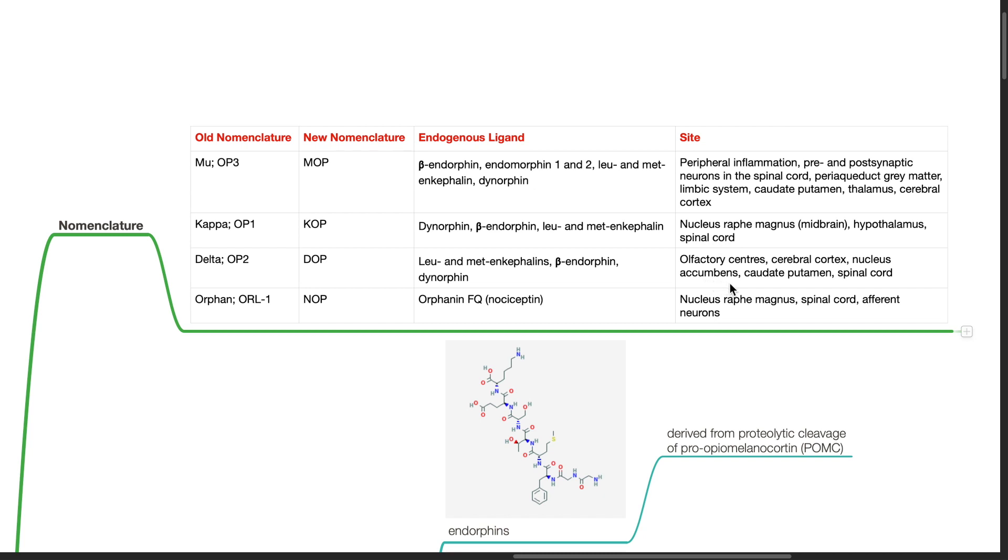The new nomenclature for the orphan or ORL1 receptor is NOP. Endogenous ligand is orphanin FQ or nociceptin. It is located in the nucleus raphe magnus, spinal cord, and afferent neurons.